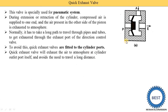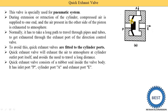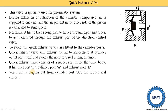This is the construction of the quick exhaust valve. Here you can see the P port, the A port, and the exhaust port E. Inside the valve body a rubber seal is provided — the black colored portion is the rubber seal. The P port is connected to the compressor, the A port is connected to the actuator, and the exhaust port E is connected to the atmosphere. When air is coming out from the cylinder port A, the rubber seal closes the inlet port P and opens the exhaust port E.